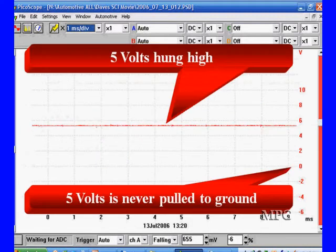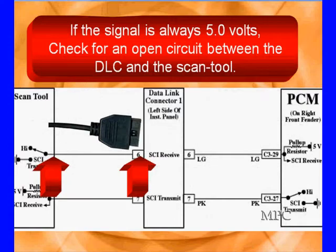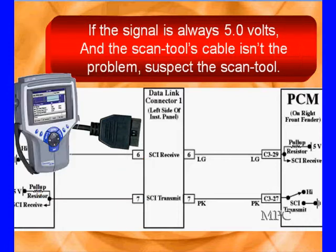Looking at the receive circuit, it goes from 5 to 0 volts. If it stays at 5 volts and is hung high — never pulled to ground — that's a failure pattern. The DLC nomenclature is identical to the PCM. It says the scan tool is not pulling it low: check for an open circuit, broken wire, or something wrong with the scan tool. Do you have the right adapter installed so it can interface to the right number of pins? If the signal is always high and the scan tool's cable isn't the problem, suspect a bad scan tool.